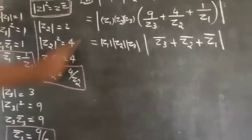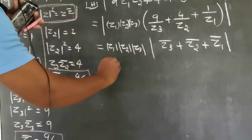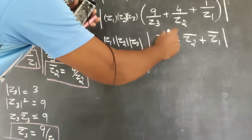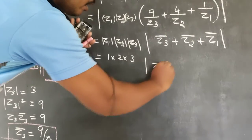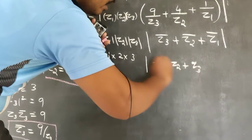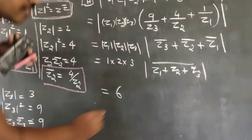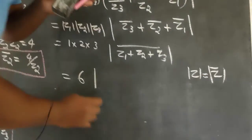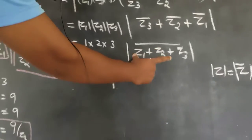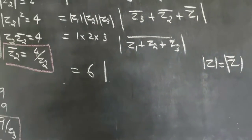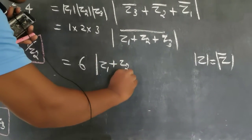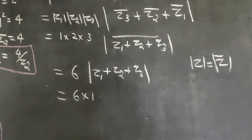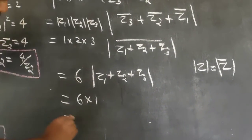Using the property that modulus of Z equals modulus of Z bar, the expression becomes modulus of Z1 bar plus Z2 bar plus Z3 bar, which equals modulus of Z1 plus Z2 plus Z3 whole bar. Since modulus of Z equals modulus of Z bar, this equals 6 times modulus of Z1 plus Z2 plus Z3 equals 6 times 1 equals 6.